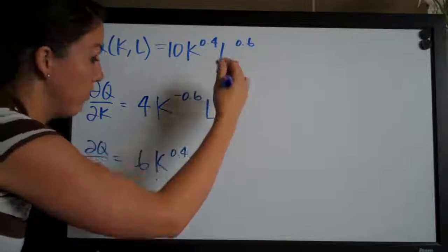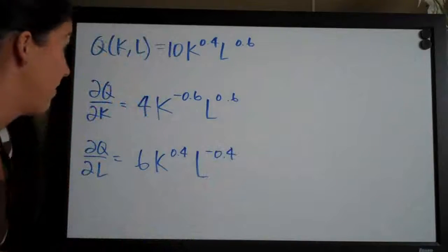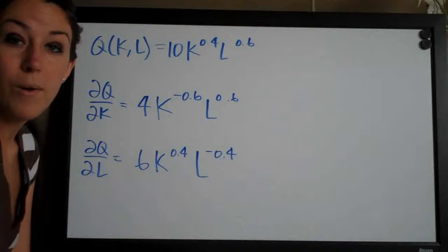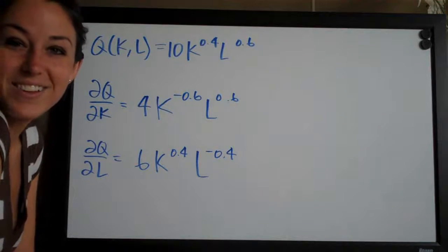0.6 minus 1 is negative 0.4 and that's it. Those are our first order partial derivatives and these are your final answers. Thanks guys. See you next time.